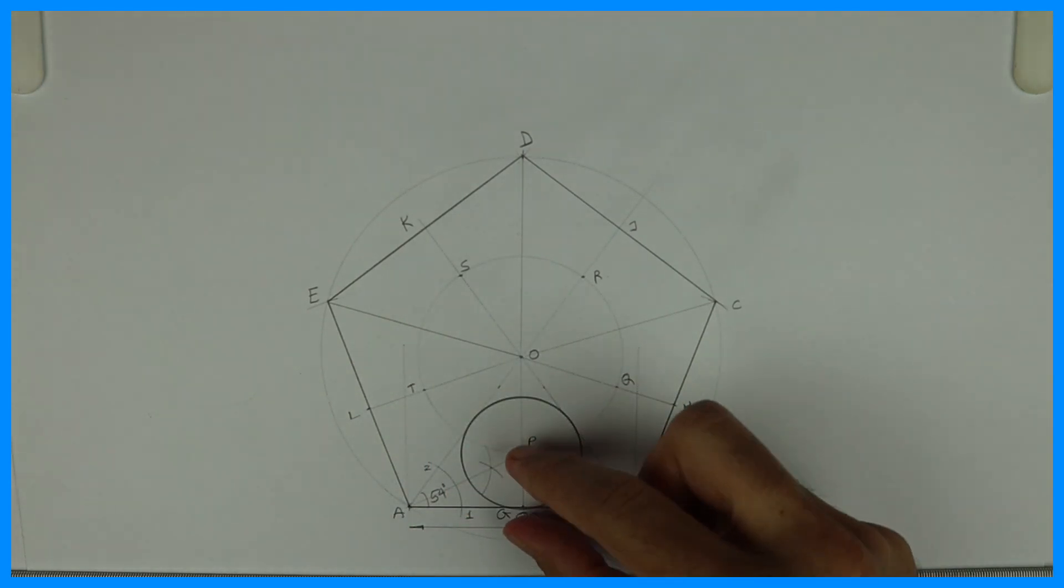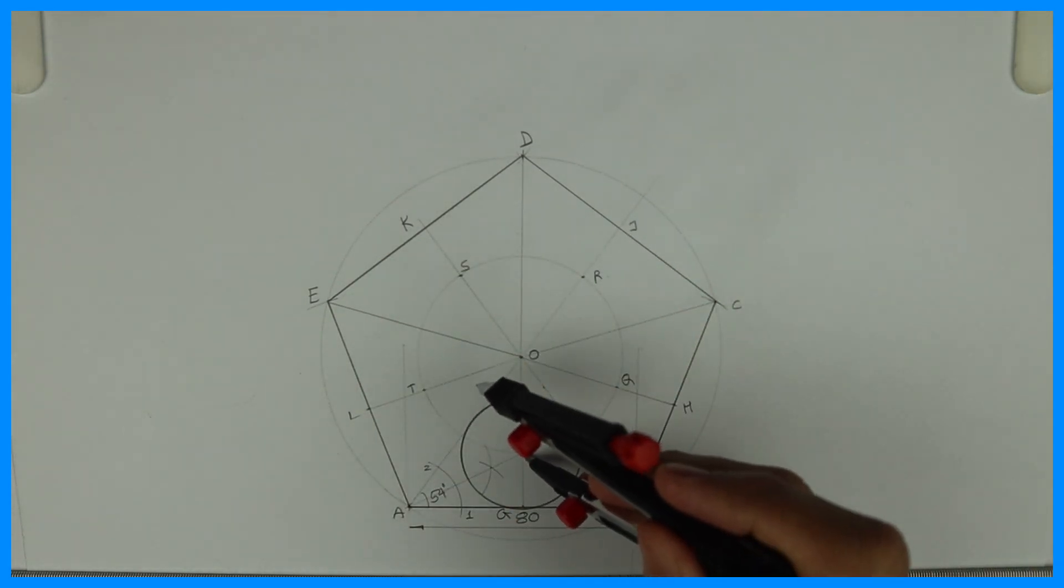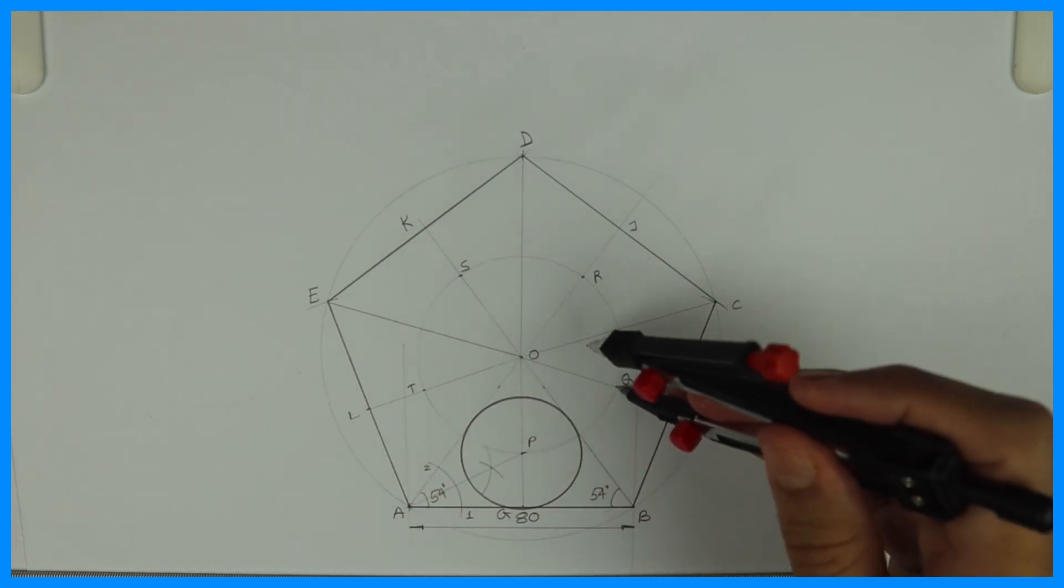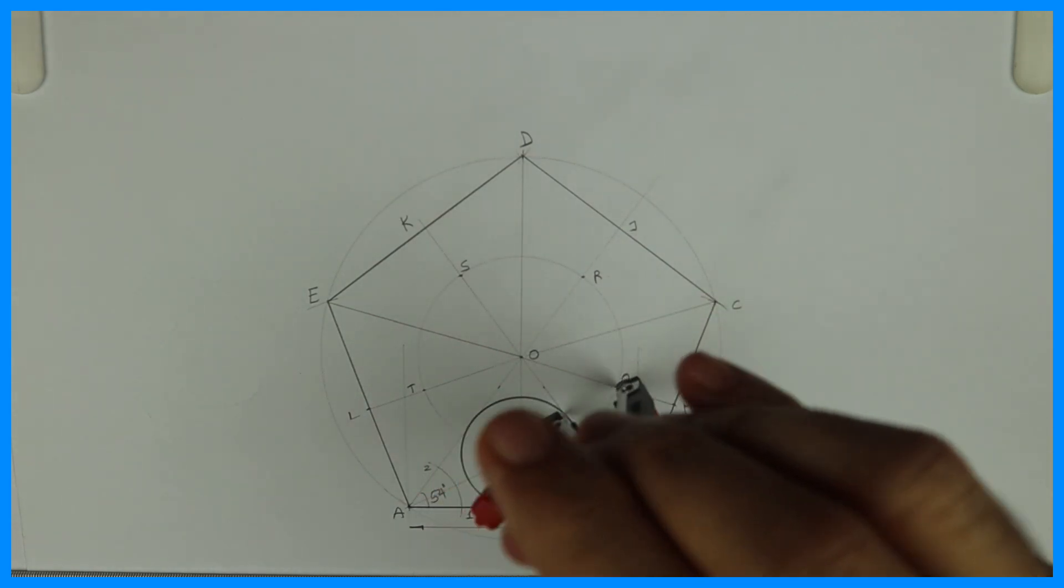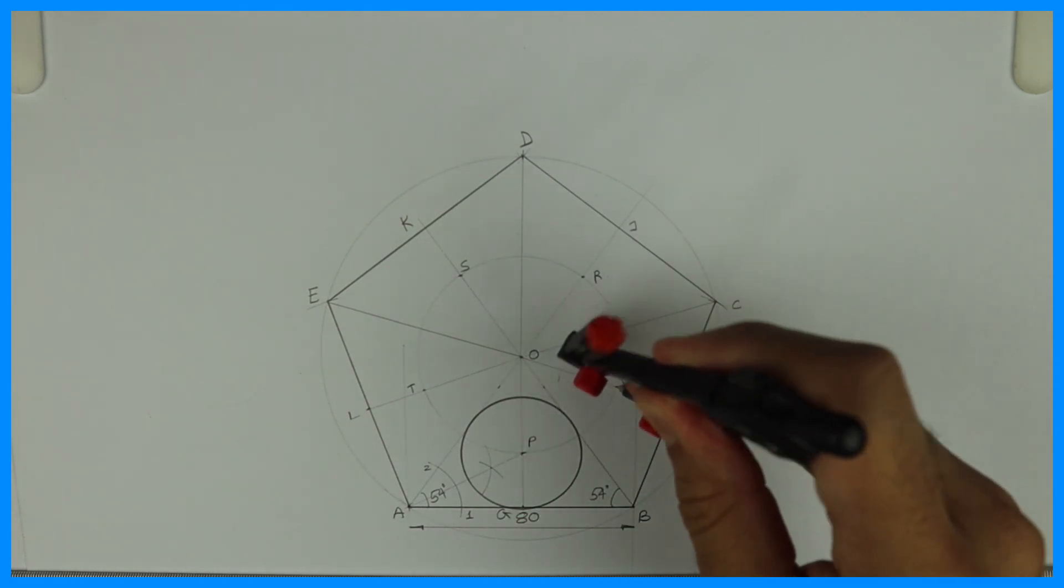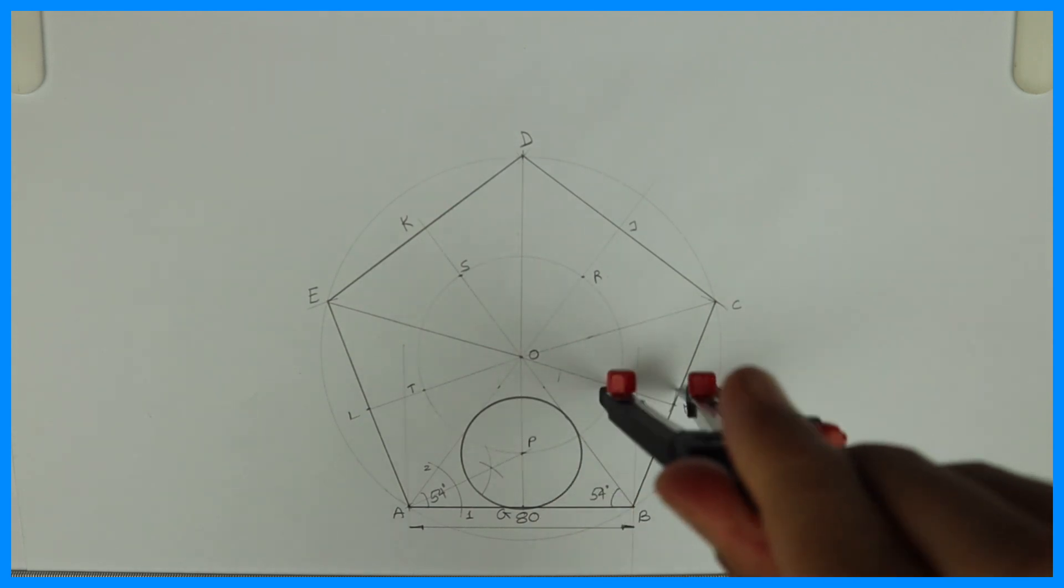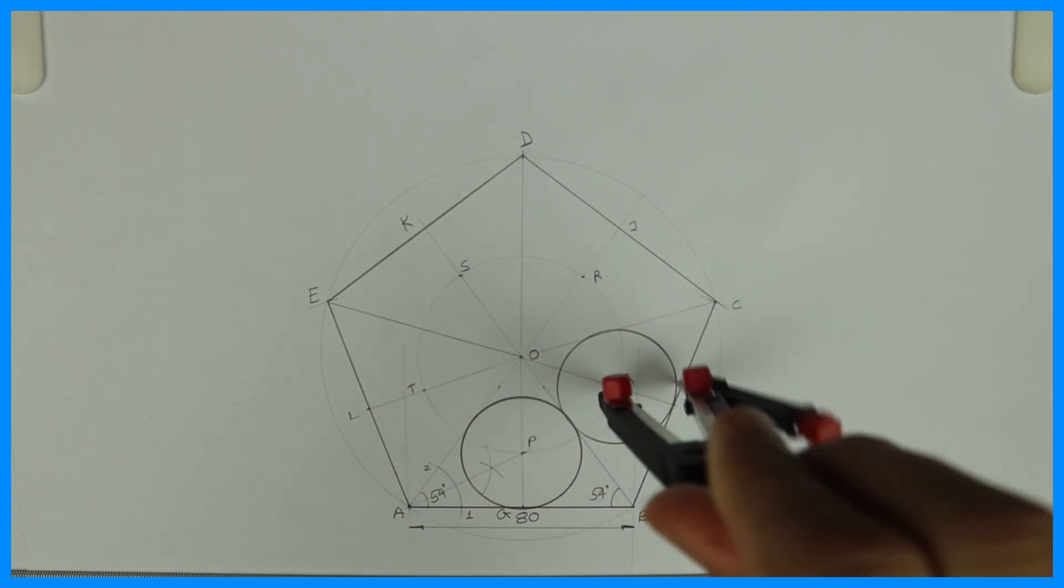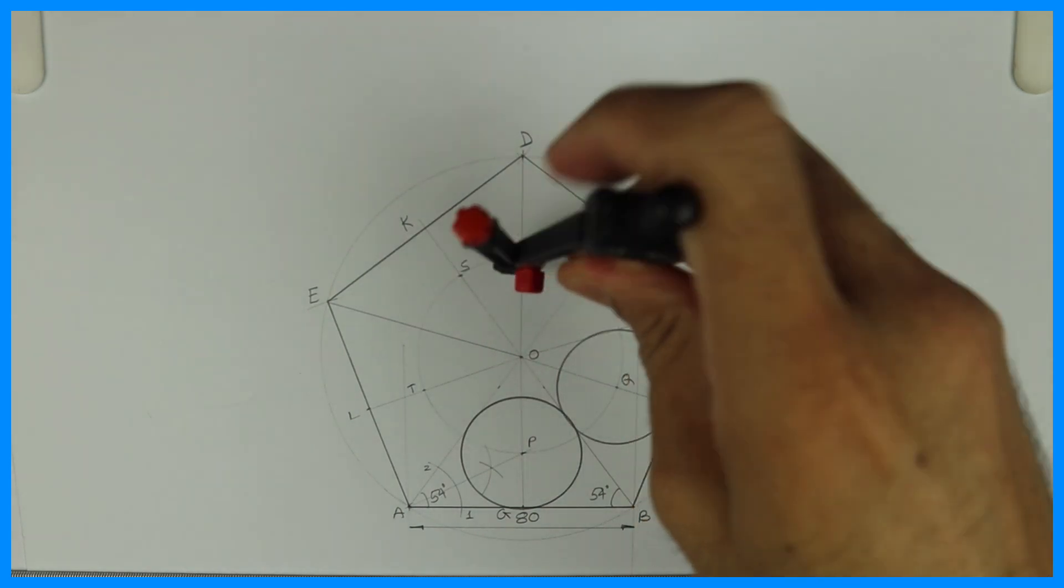Then again, take the same radius P to G and you can draw it from all these centers. By this way, we can draw all five circles inside a pentagon, touching one side and two other circles. Thank you.